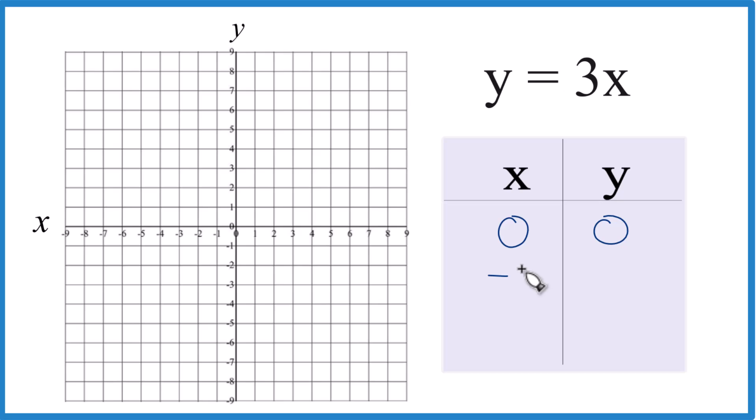Let's choose negative 1, because 3 times negative 1, that's just negative 3. And if we chose positive 1, 3 times 1 is positive 3. So now we have these points for the line y equals 3x. We can just graph them.